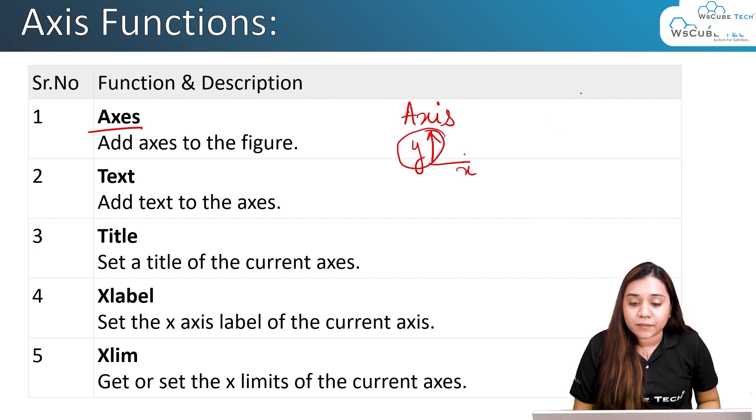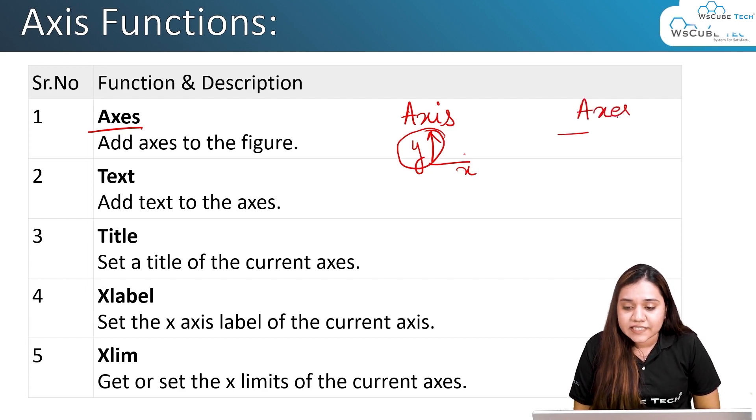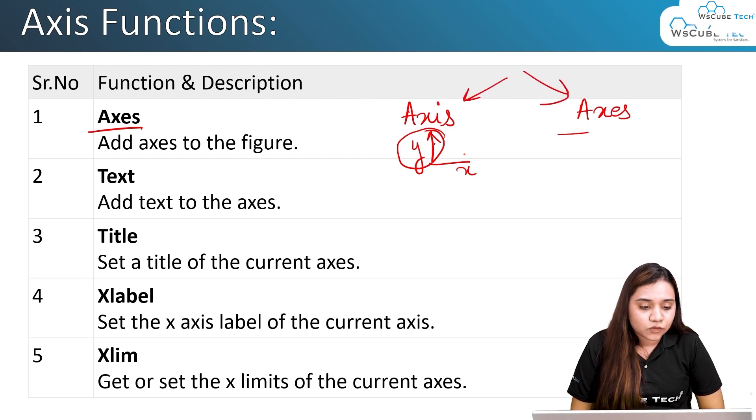If you're talking about a single axis, the term axis is used. If you're talking about multiple axes, for example x and y axes or x, y, z axes, then we use the term axes. Axes is used for multiple values.